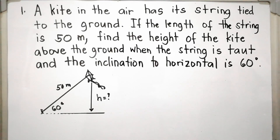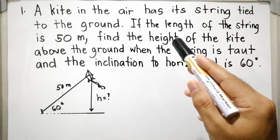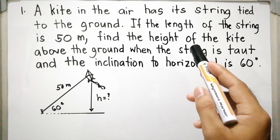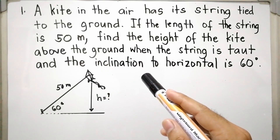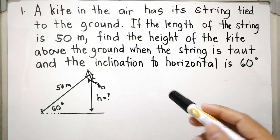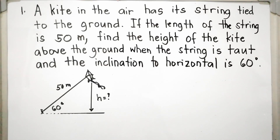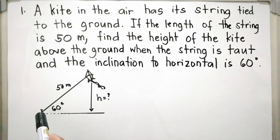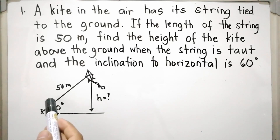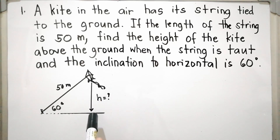Let us have example number one. A kite in the air has its string tied to the ground. If the length of the string is 50 meters, find the height of the kite above the ground when the string makes an inclination to the horizontal of 60 degrees. The kite is above the ground, the string is 50 meters, and the angle of inclination to horizontal is 60 degrees.